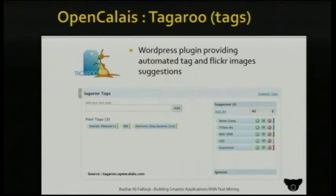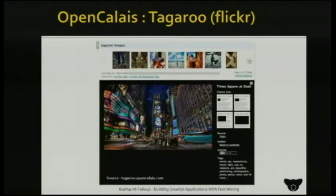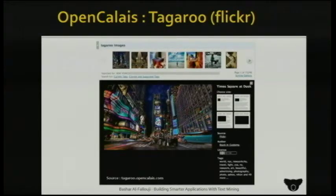Open Calais is used in different applications. WordPress has a plugin named Tagaru that automatically calls Open Calais and suggests tags related to the post you just wrote. They're also integrated with Flickr — the tags returned will call Flickr and fetch pictures matching those tags, so you can associate pictures to your article automatically instead of wasting time searching for one. This is one way to leverage text mining.